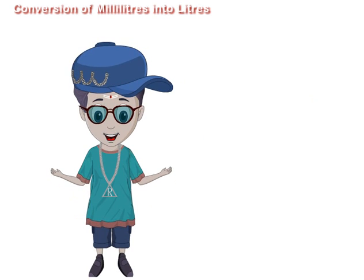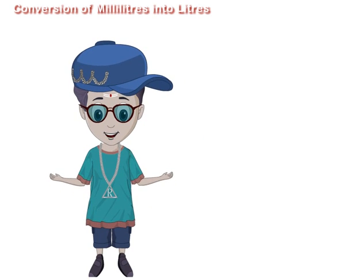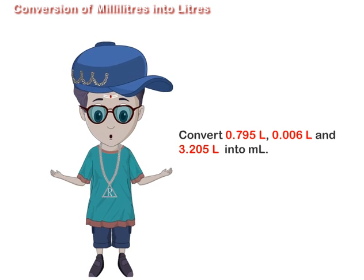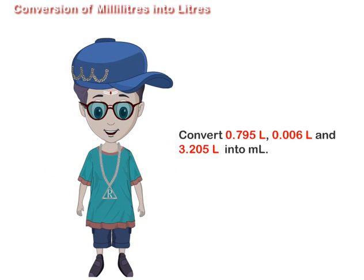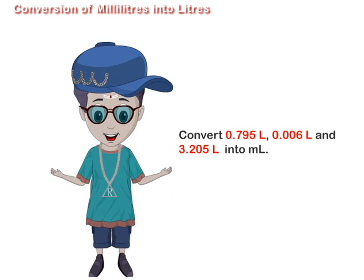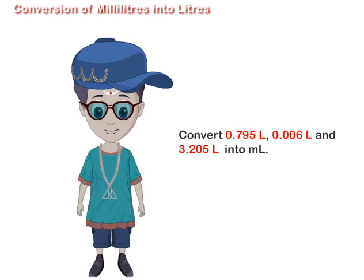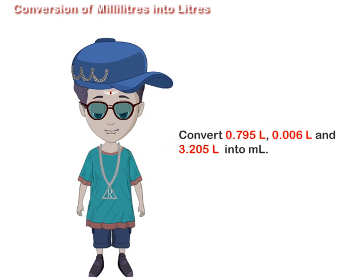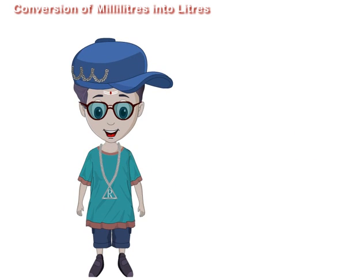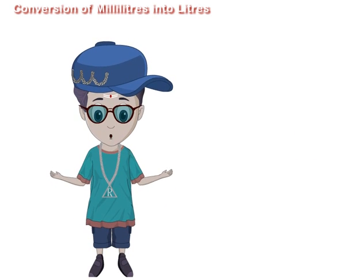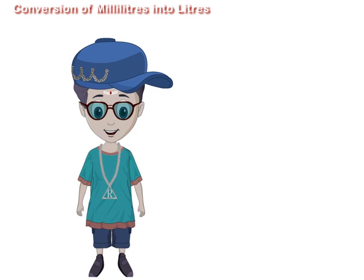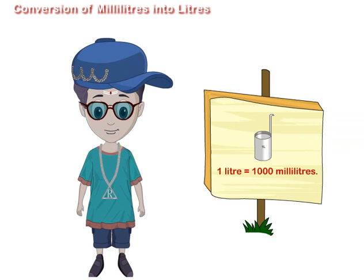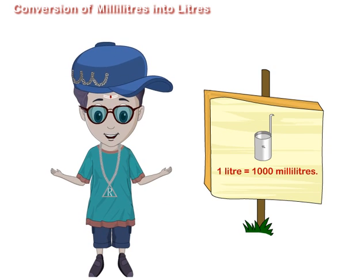Friends, let us now learn the conversion of litres into milliliters, by converting 0.795 litres, 0.006 litres, and 3.205 litres into milliliters. To convert litres into milliliters, we multiply by 1000, as 1 litre is equal to 1000 milliliters.